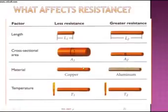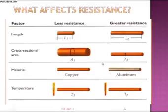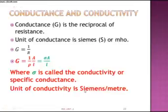Resistance also depends upon specific resistance, which varies with the material used. For copper it has less resistivity, and for aluminum it has higher resistivity, thereby giving higher resistance. Also, temperature affects resistance — as temperature increases, resistance increases, and lower temperature gives lower resistance.